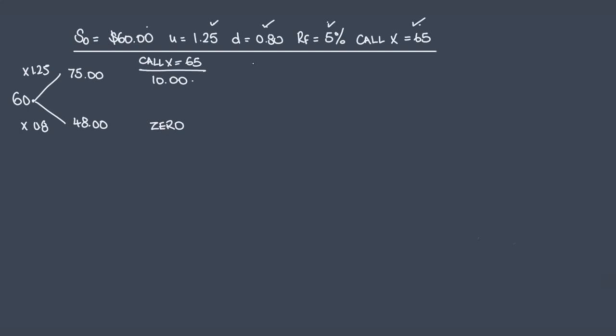Now, this is where the magic starts. We calculate what's known as the hedge ratio, H. H is the difference in the call payoff at expiry, which is 10 minus 0, which is 10, divided by the difference in the underlying, 75 minus 48. That is 27. That gives us a hedge ratio of 0.3704.